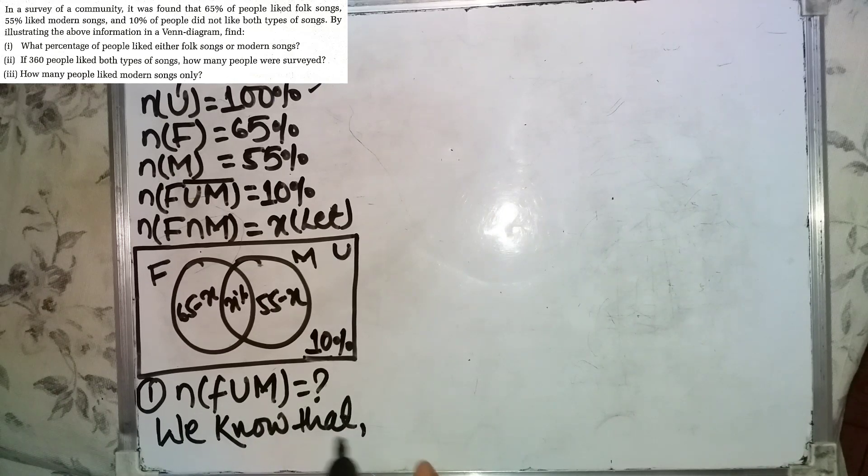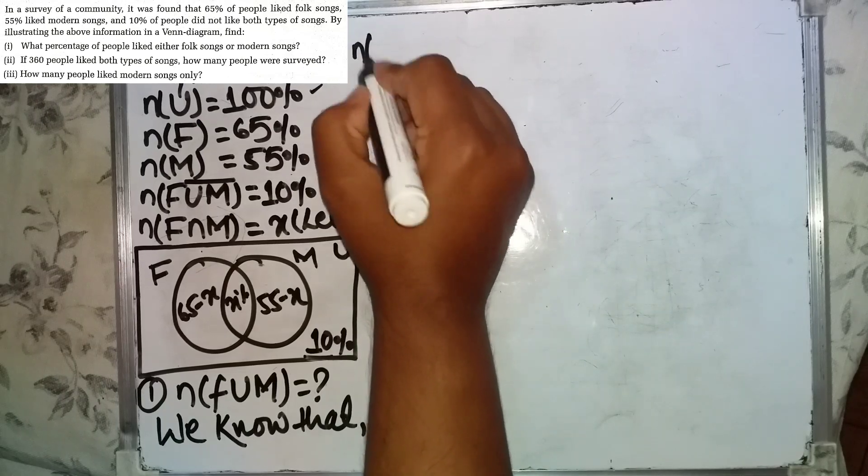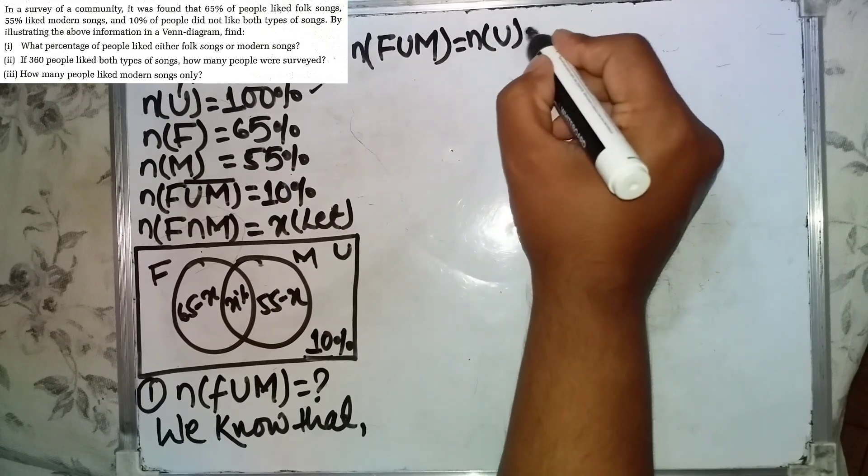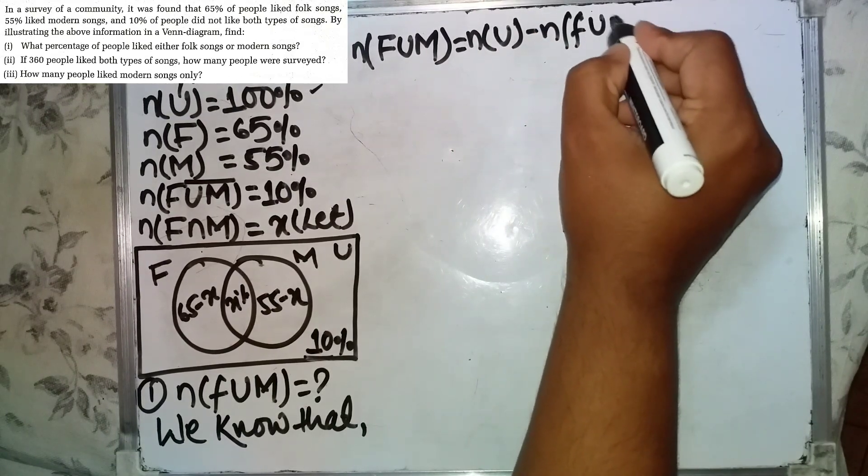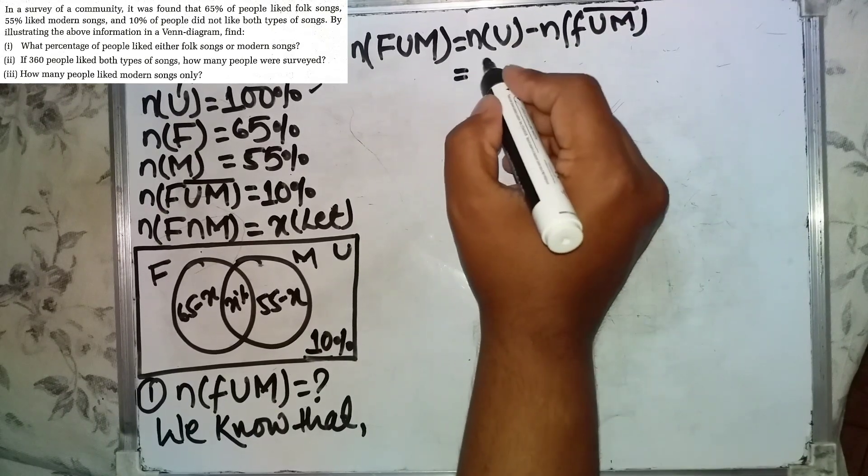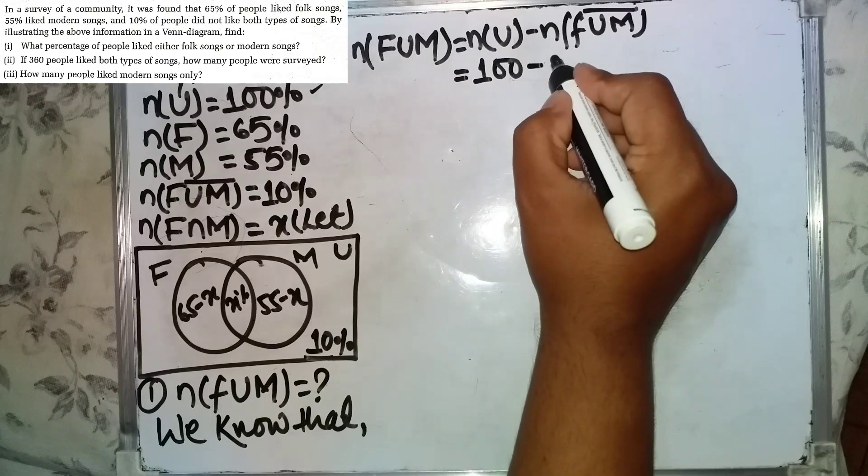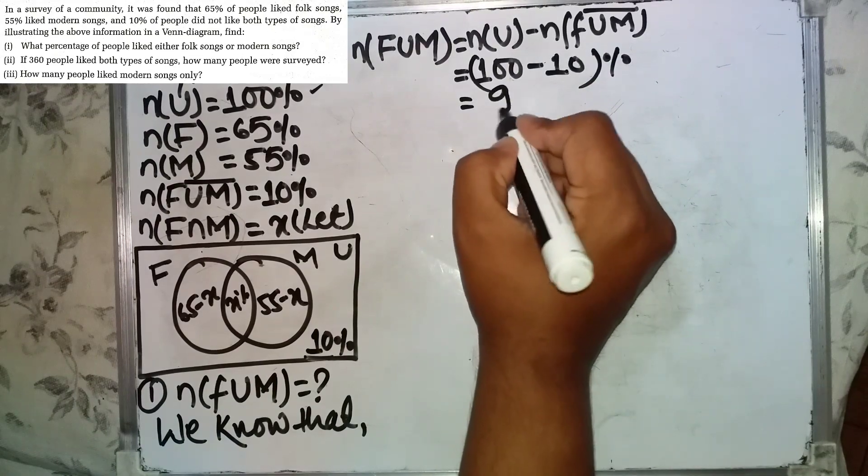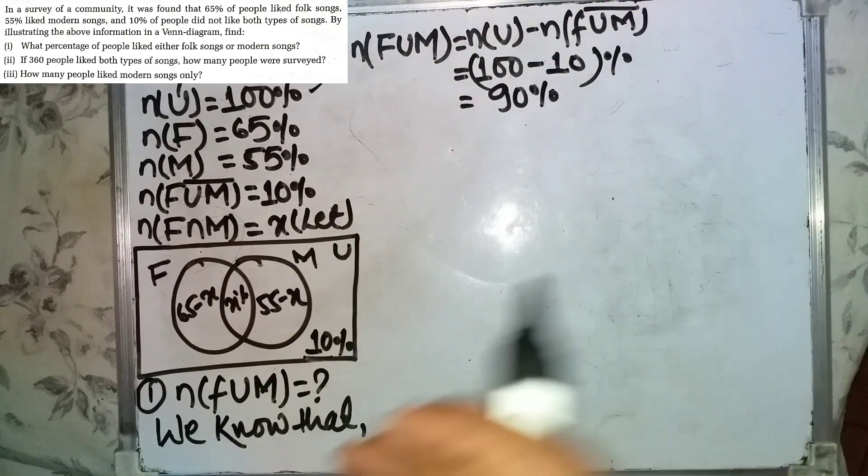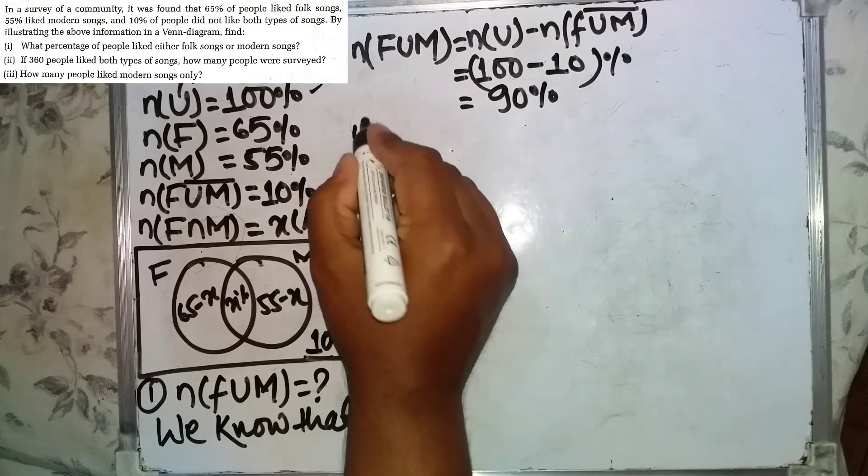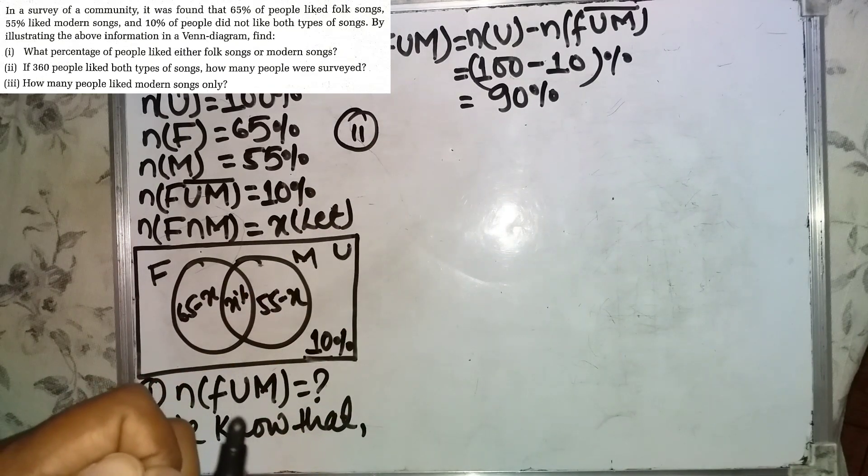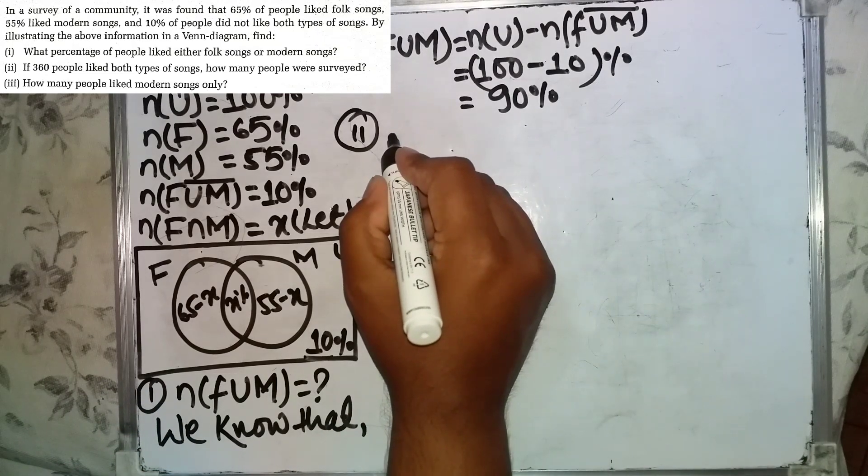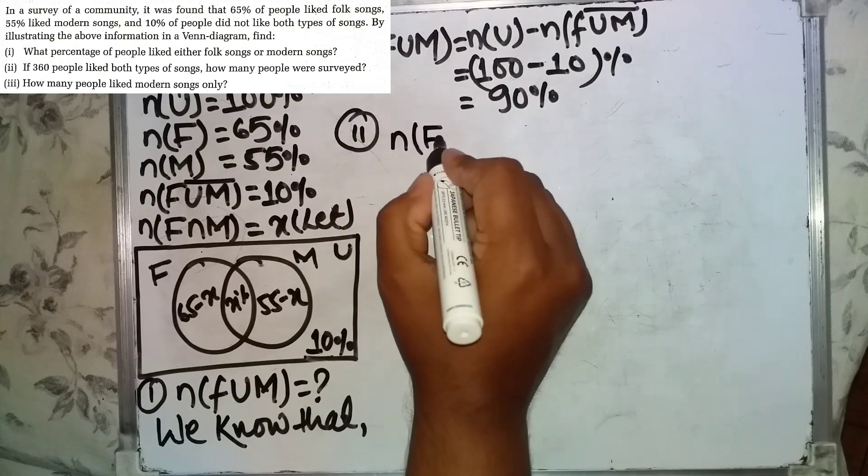We know that if 360 people liked both types of songs, then N of F intersection M equals 360.